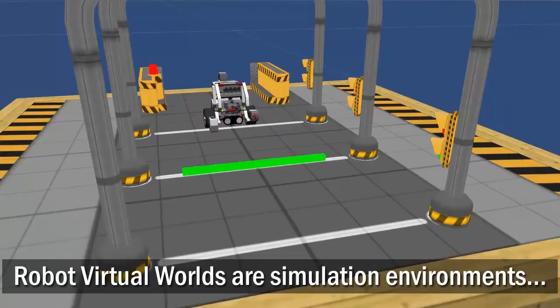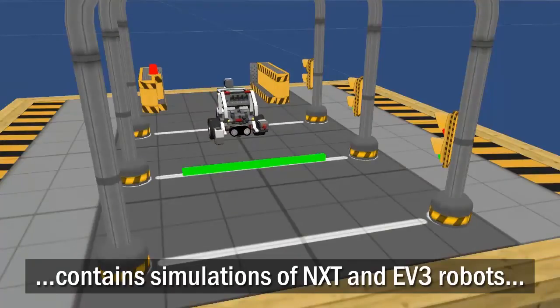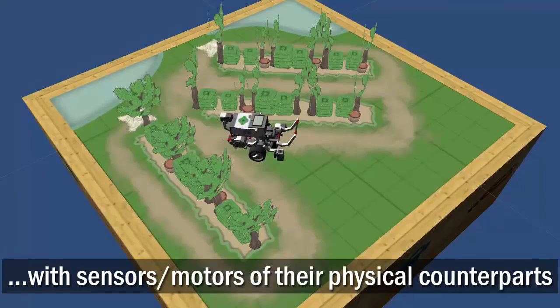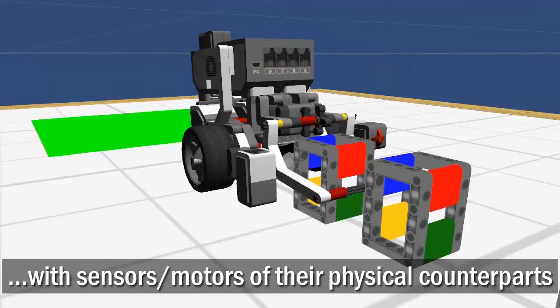Robot Virtual Worlds are simulation environments that contain simulations of NXT and EV3 robots, with the same sensors and driving motors as their physical counterparts.